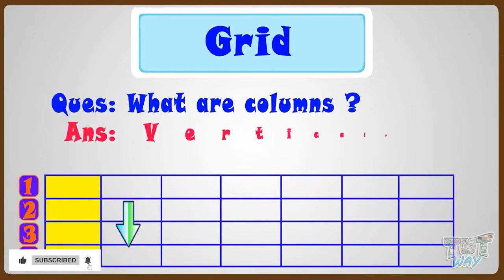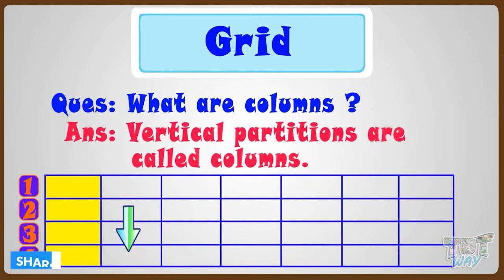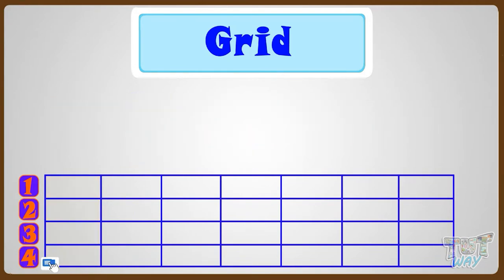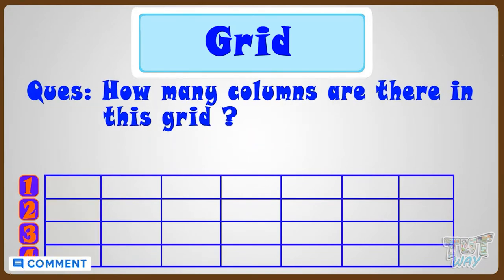These vertical partitions in the grid are called columns of the grid. Now let's count how many columns are there in this grid.